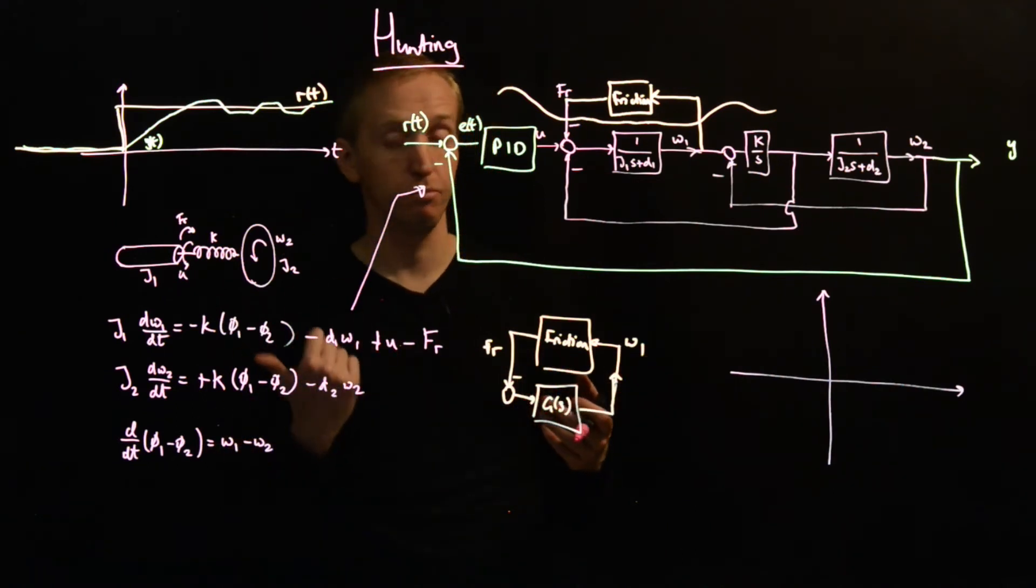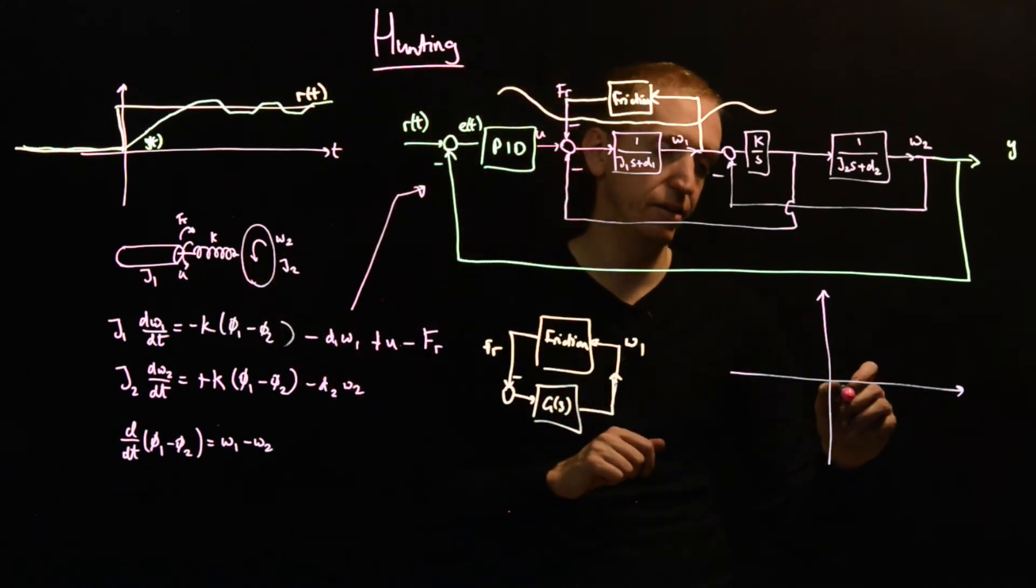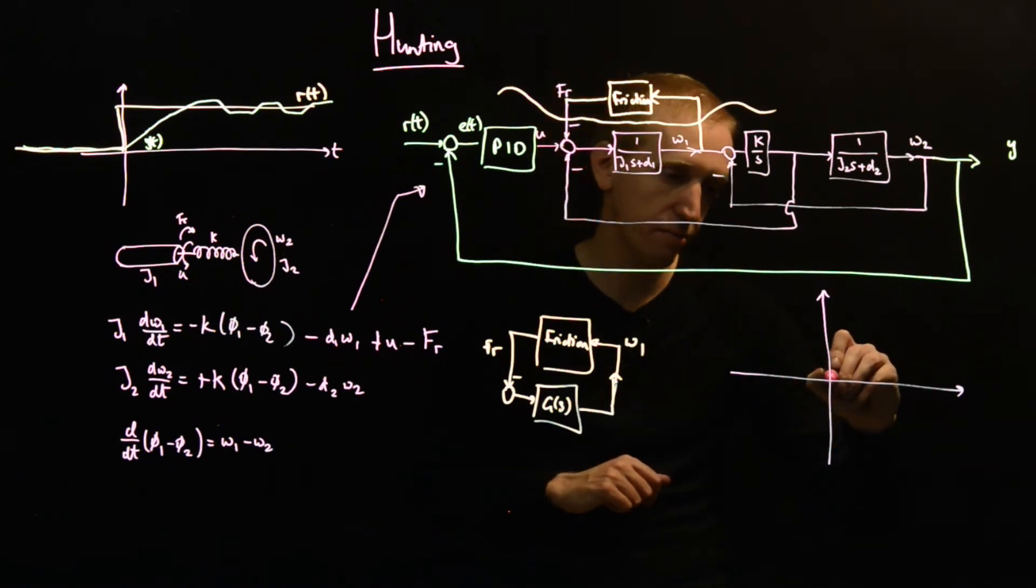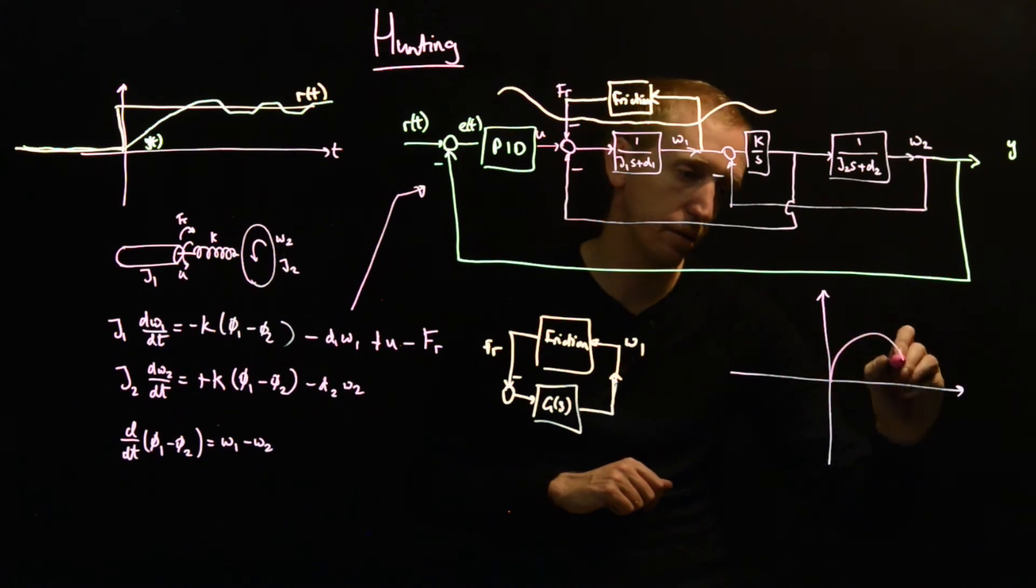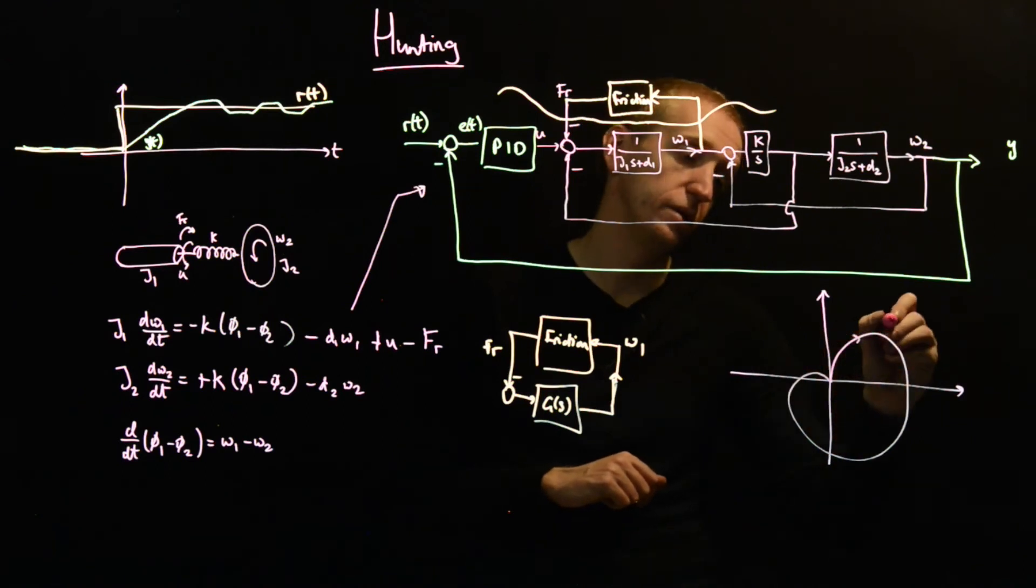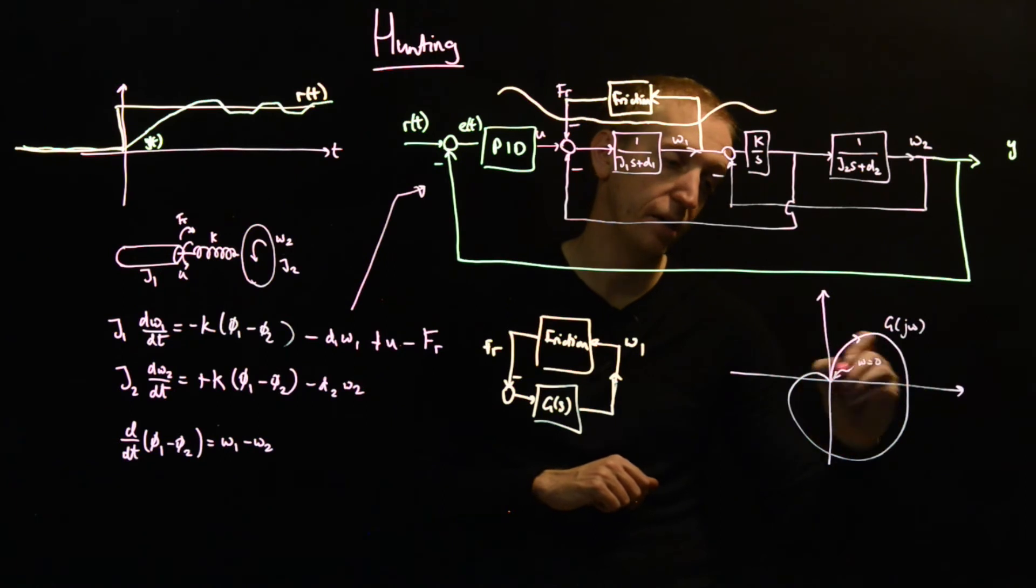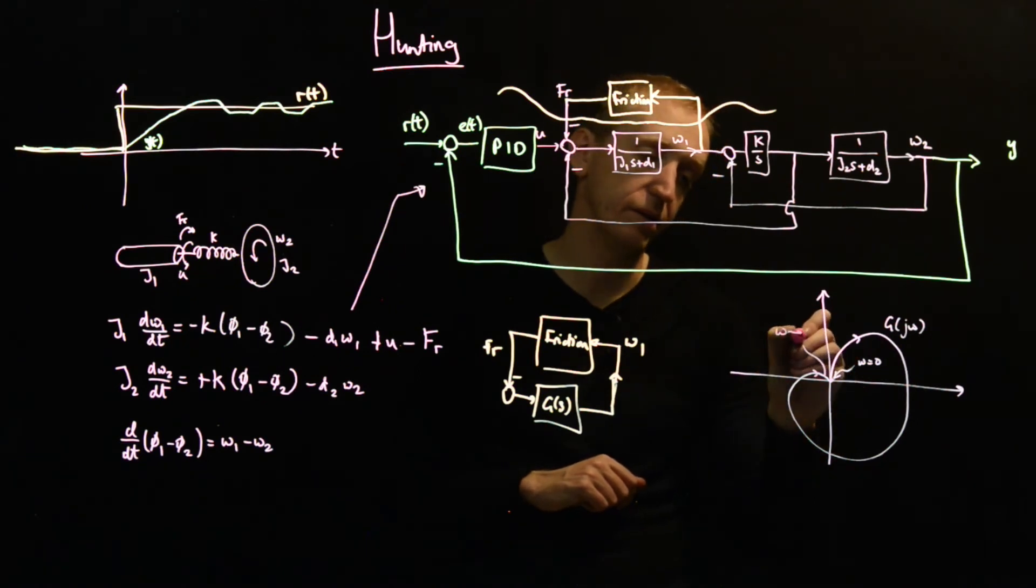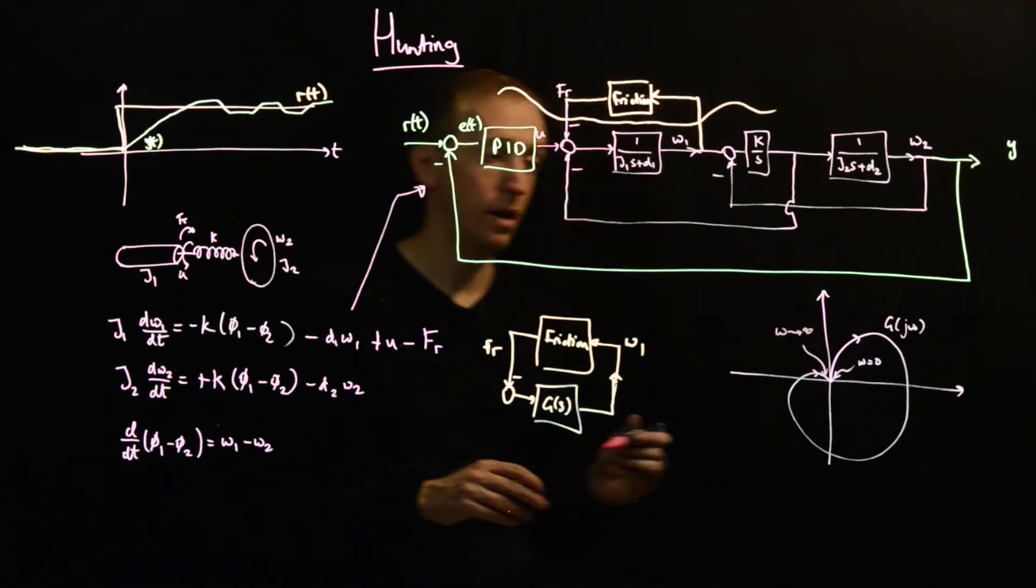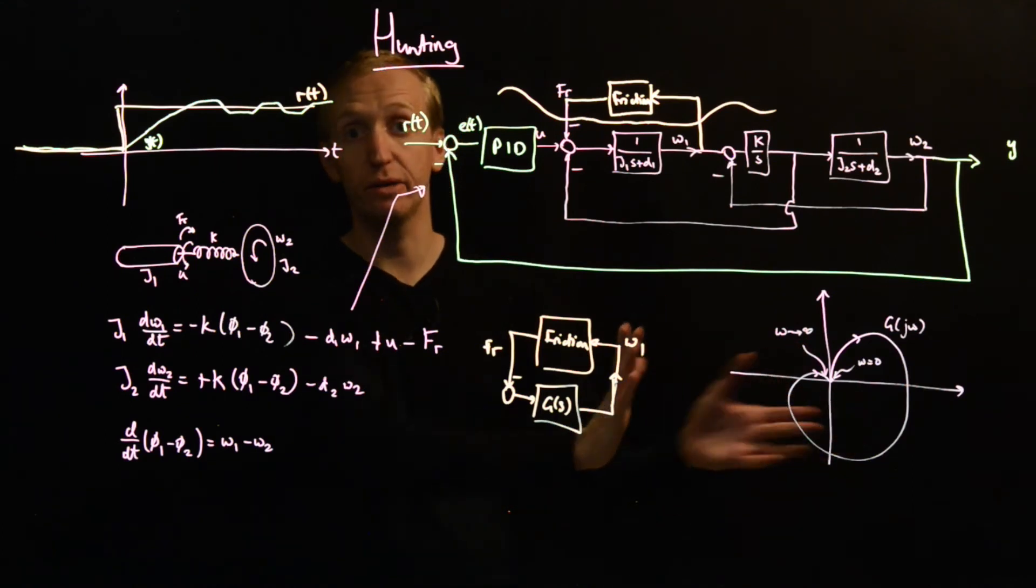And find out what this transfer function G of s is. And depending on the shape of that transfer function, you may find that you predict limit cycles or you might not predict limit cycles. So a sort of a fairly naive design, a sort of a standard shape that you might get for your G of s is something that looks a bit like this. So this is the Nyquist diagram of G. This is omega is equal to zero, sort of starting here. And then omega increases, increases, increases, increases, increases and tends to infinity down here. So omega tends to infinity is in there.